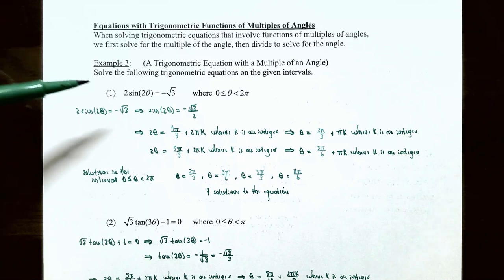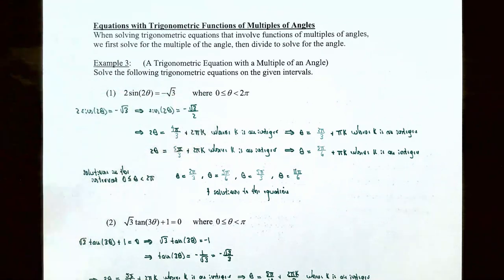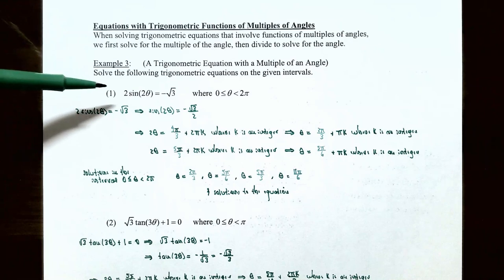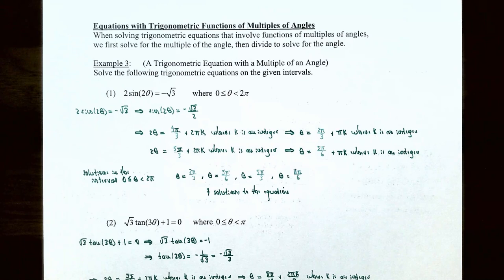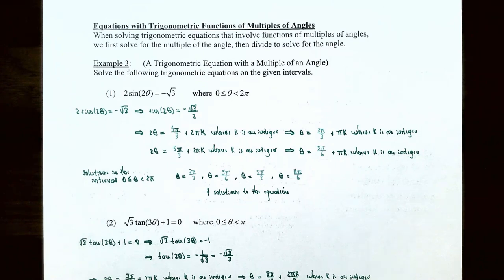Number one: solve two times sine of two theta equals negative square root of three, where theta is between zero and two pi. The sine function has a double angle argument of two theta. If we used the double angle identity, sine of two theta equals two sine theta cosine theta, we'd introduce both functions and overcomplicate the equation. Instead, let's solve for the double angle directly by isolating the trigonometric function.